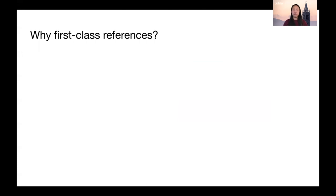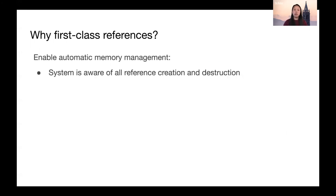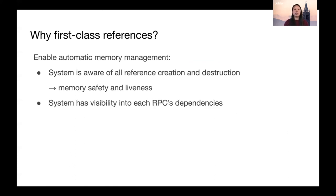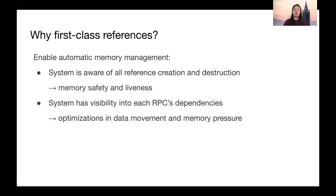There are two ways that first-class references enable automatic memory management. First, the system is aware of all reference creation and destruction operations, which is important for correctness. Second, the system has visibility into each RPC's dependencies, allowing it to better handle data movement and memory pressure.